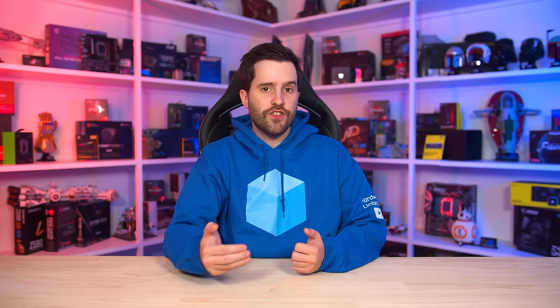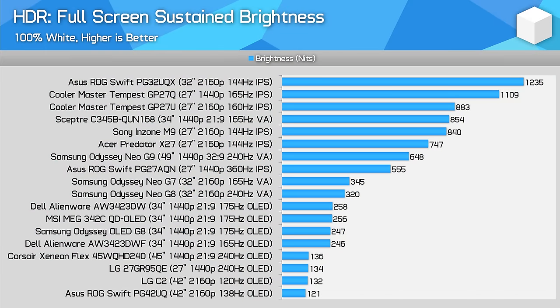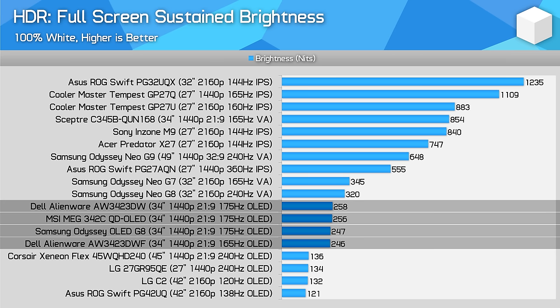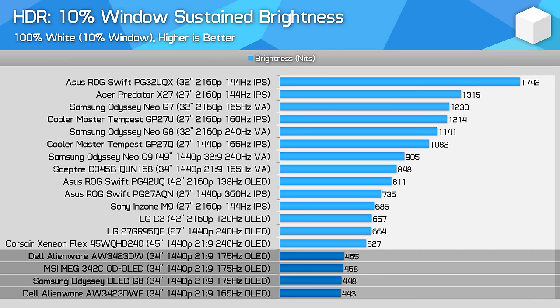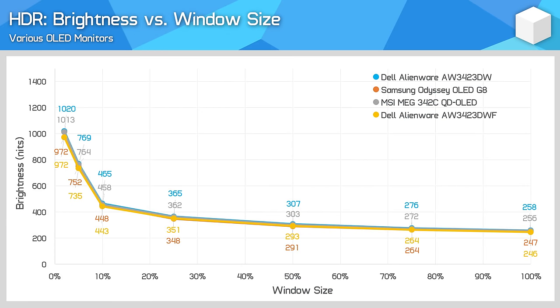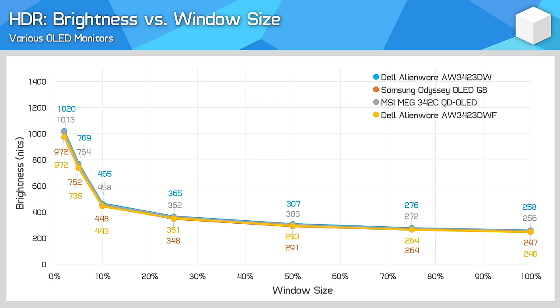The general HDR performance characteristics are the same across all four monitors as they use the same panel — per-pixel local dimming, deep zero level blacks, all the usual OLED benefits are identical. However, the tuning differs per product. Basic brightness tests yield the same results: full screen brightness is around 250 nits, 10% window brightness is around 450 nits, and all can hit around 1000 nits at a 2% window size. Real-world brightnesses do differ though — the MSI342C is the brightest in our YouTube video sample, while it's the OLED G8 that's the brightest in the film sample. For gaming, all four were capable of hitting 1000 nits.